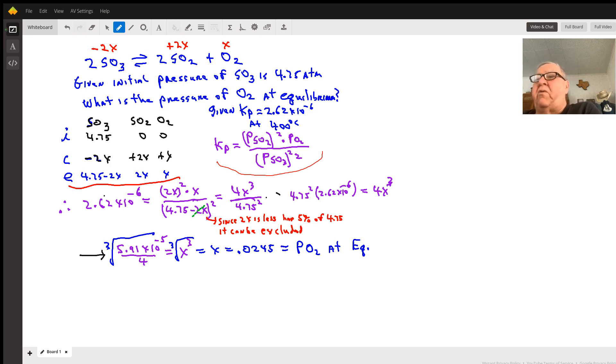So then we know that 4.75 squared times k sub P, 2.62 times 10 to the minus 6, will equal 4x cubed. We simply just evaluate and take the cubed root of both sides to get x is equal to 0.245 atmospheres, which would be the pressure of the oxygen gas at equilibrium.